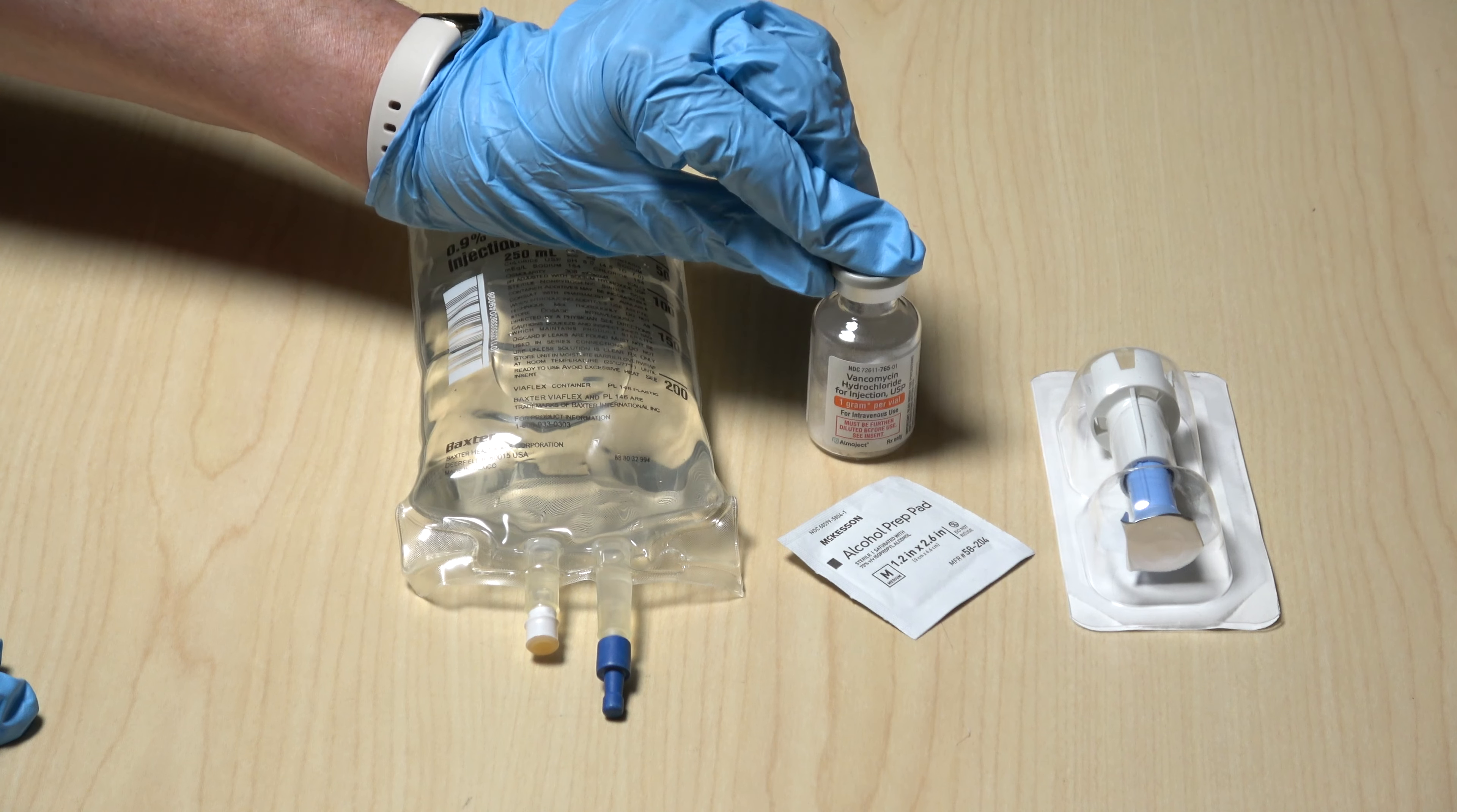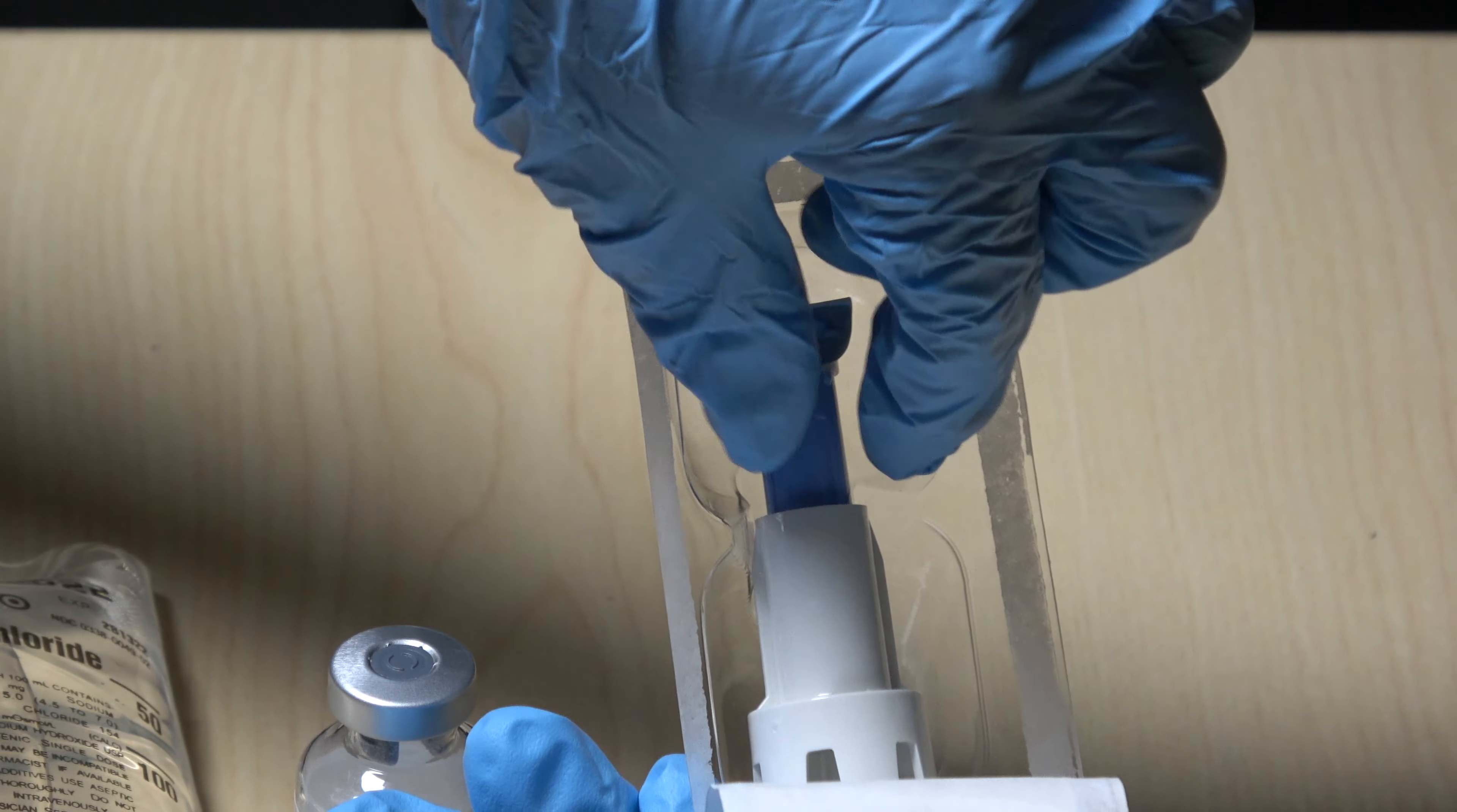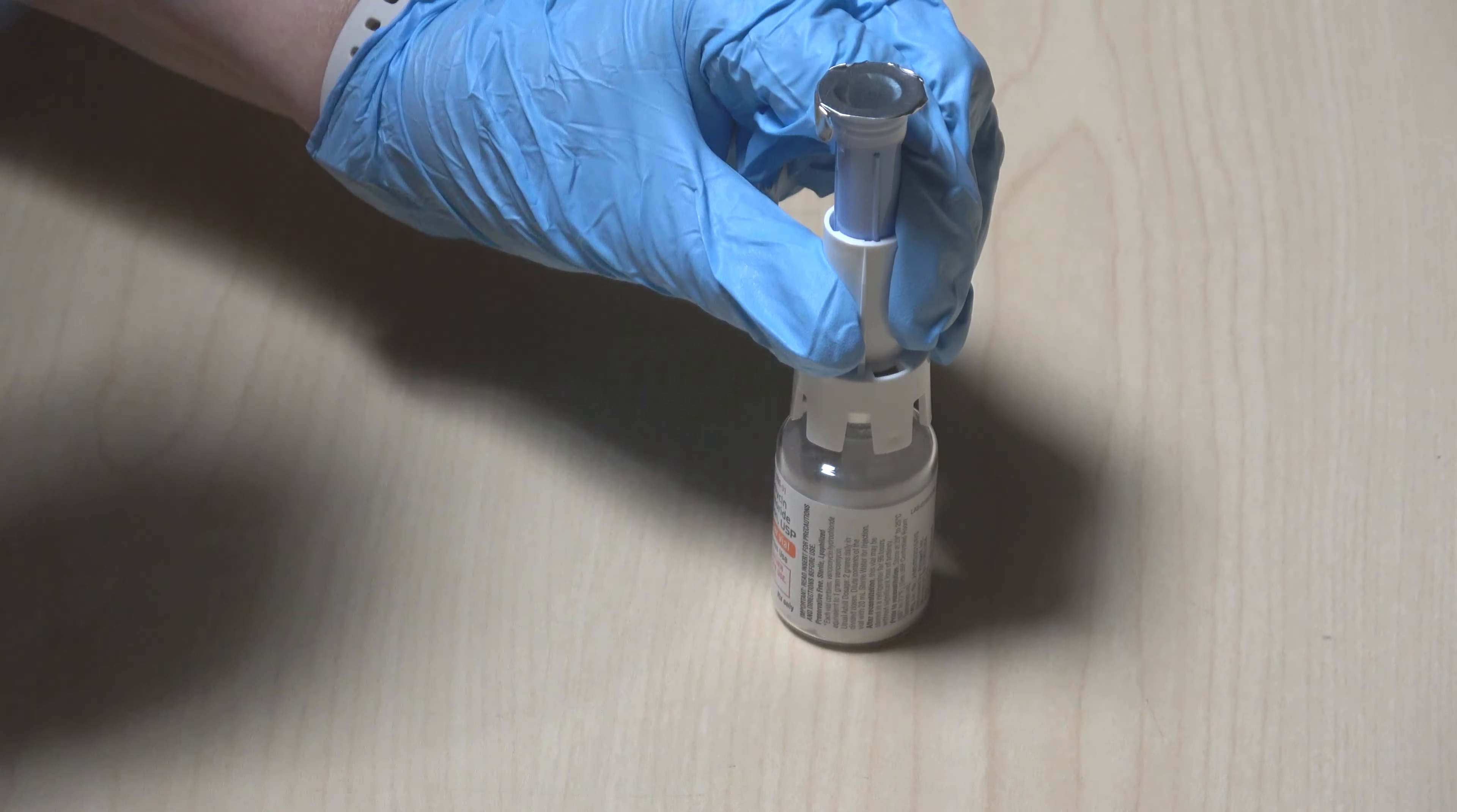Step one: remove the cap from the vial. Open the vial-mate adapter and remove it from the container. Be careful not to touch the inside of the white tube. Step two: place the white end over the top of the vial and press down to snap the adapter onto the vial.